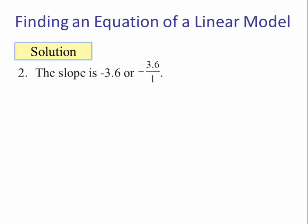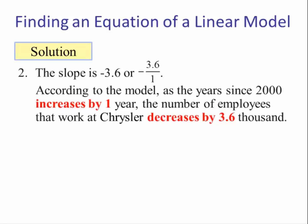The slope is negative 3.6, or negative 3.6 over 1. As X increases by positive 1, Y decreases by 3.6 units. In terms of this problem: according to the model, as the year since 2000 increases by one year, the number of employees at Chrysler decreases by 3.6 thousand. Be sure to include your units.